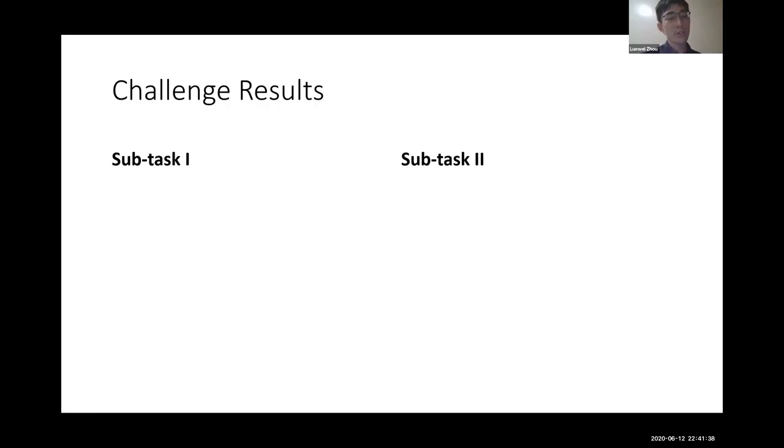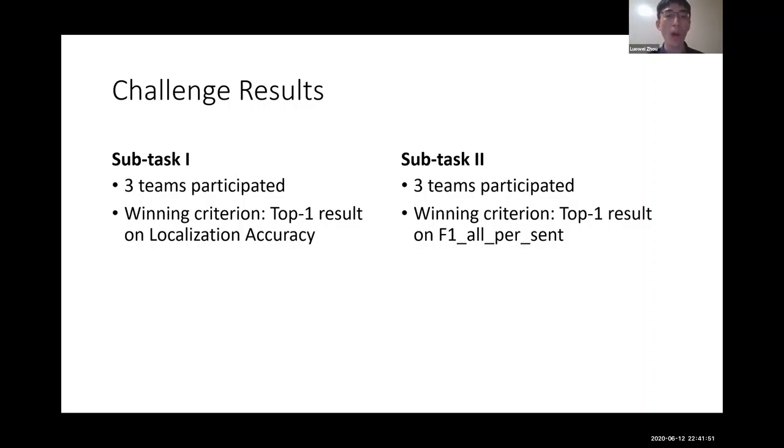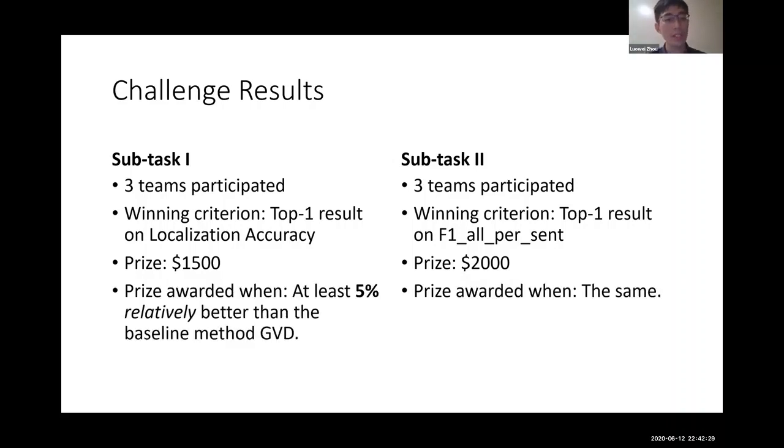And so here comes the challenge results. I want to first share with you some challenge stats. So on each task, we have three teams participated. And the winning criteria for subtask 1 is the top one result on localization accuracy. And for subtask 2 is the top one result on F1-OR per sentence. So it's F1 score averaged across all the sentences. And for subtask 1, the winning prize is $1,500. And for subtask 2, we raised the price a little bit because the task itself is more complicated. So the prize is $2,000. And they're sponsored by University of Michigan Robotics and PNG. So the prizes are awarded when the proposed methods are at least 5% relatively better than the baseline method GVD.